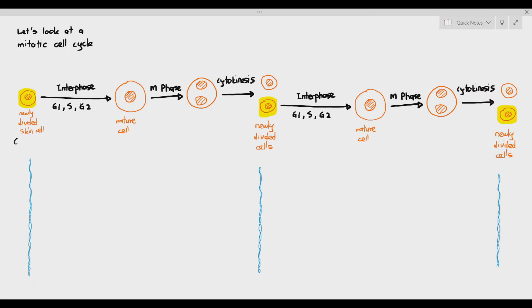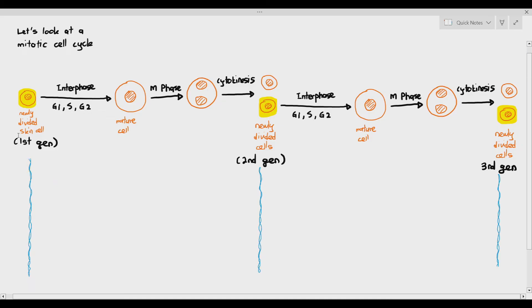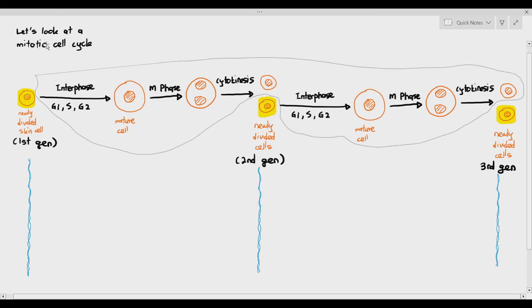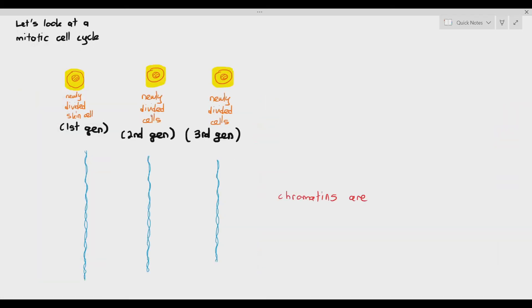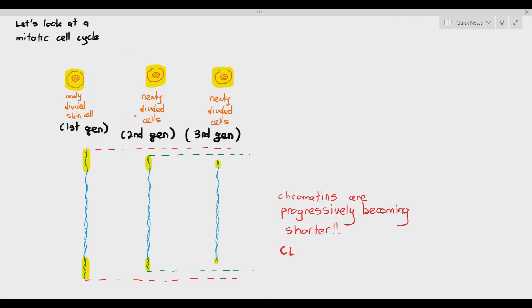Let's focus on three highlighted cells and look at their chromatin. Each of the newly divided cells are genetically identical, which means the DNA in all three cells, or the chromosomes in all three cells, have to be exactly the same. However, when we look at these three newly divided cells in their first, second, and third generation, we notice something rather interesting: the chromatins are progressively becoming shorter. And if you remember, the telomere is at the end of the chromatin — so the telomere is actually becoming shorter. There seems to be a loss of telomeres happening across the generations.